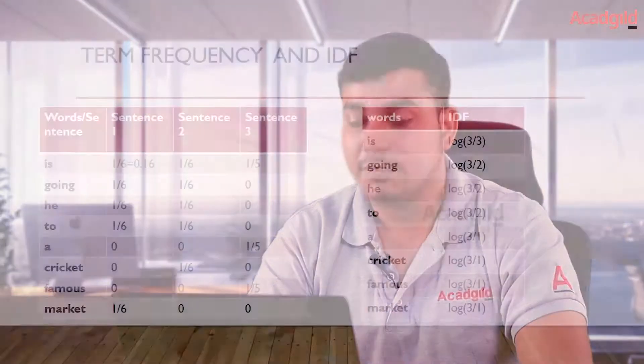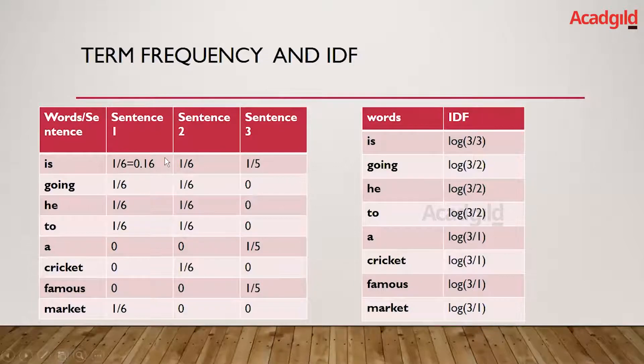Now that we have computed the term frequency and the inverse document frequency, the next step is to multiply them together. We will get a resulting value that forms a matrix, which we can then forward to the model. By getting these different values, some semantic information will be preserved for the model's understanding. Let me show this multiplication in the PPT.